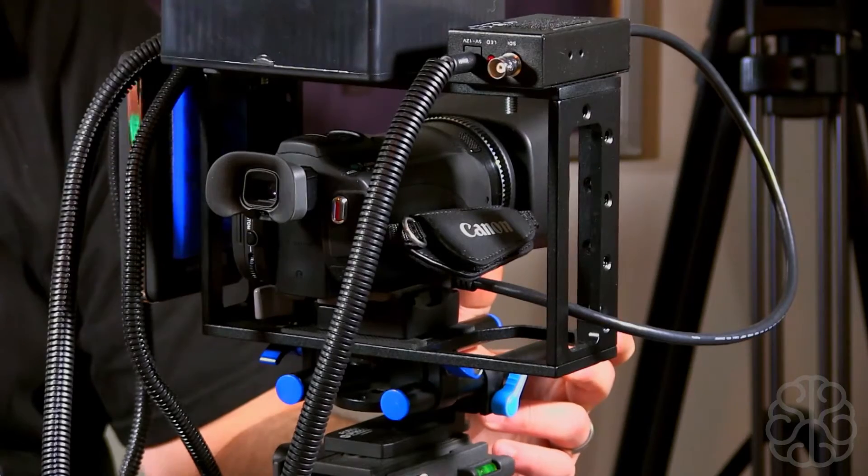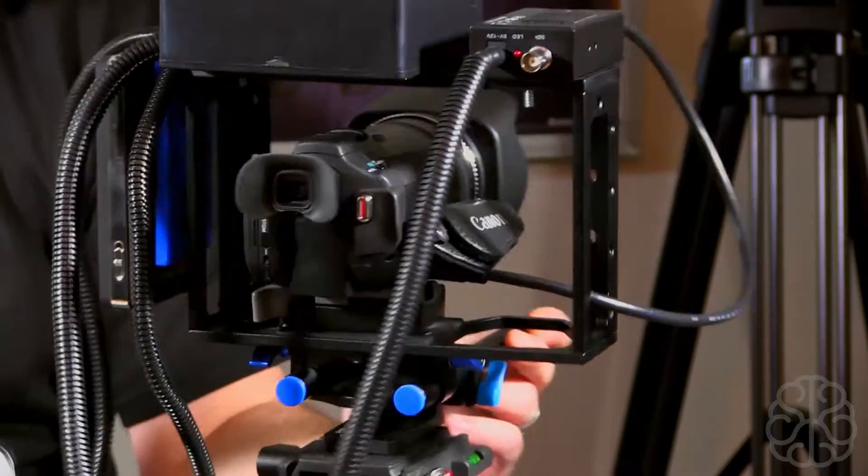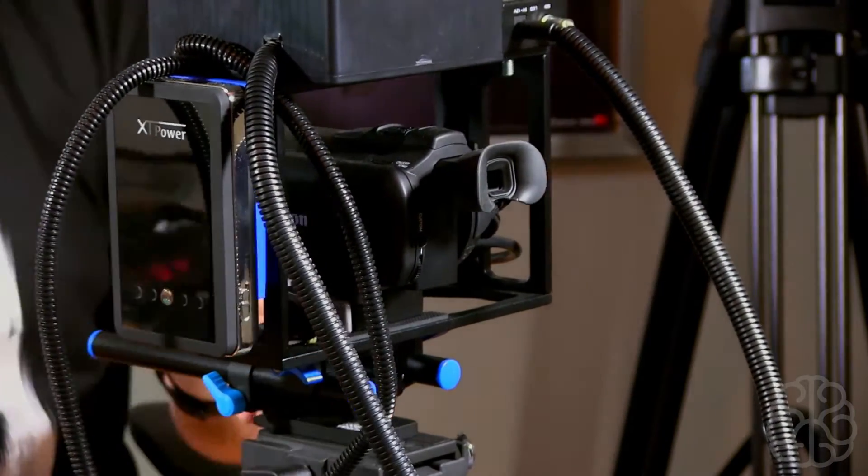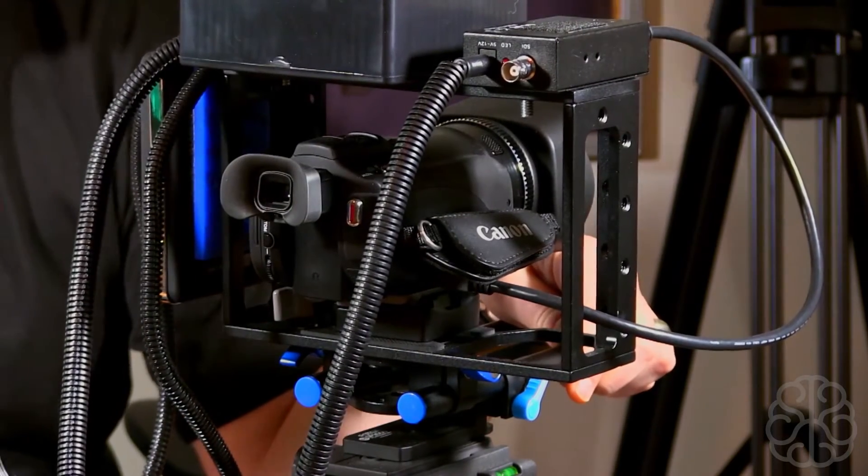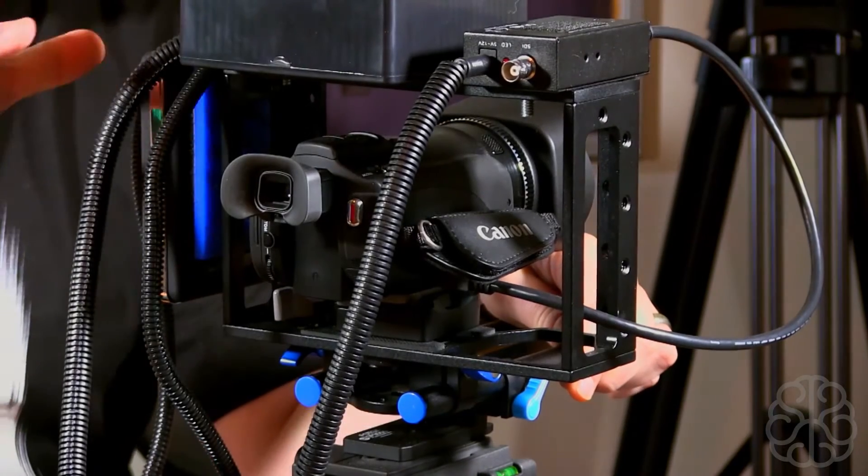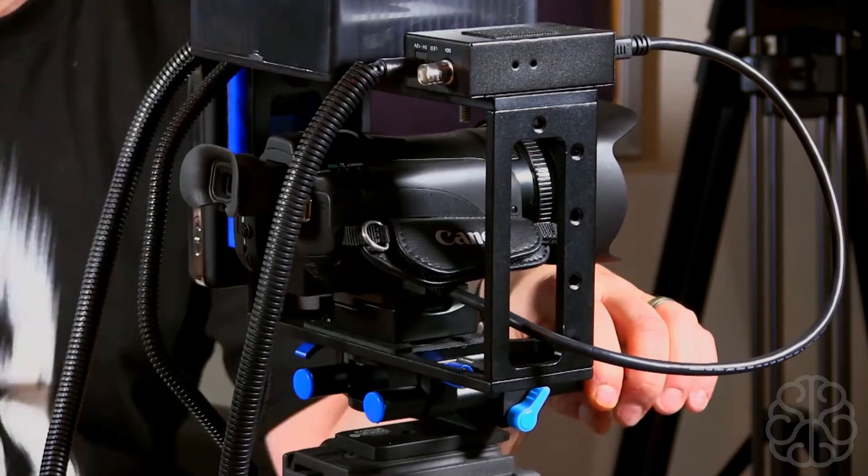What I'm probably going to do is build a little box that's going to go between this and the camera. I'm going to put a step-down converter that's going to go from 9 volt to 8.4 volts, which is what it wants. Then I'll be able to actually have almost a setup that's wireless except for the SDI cable at the top.